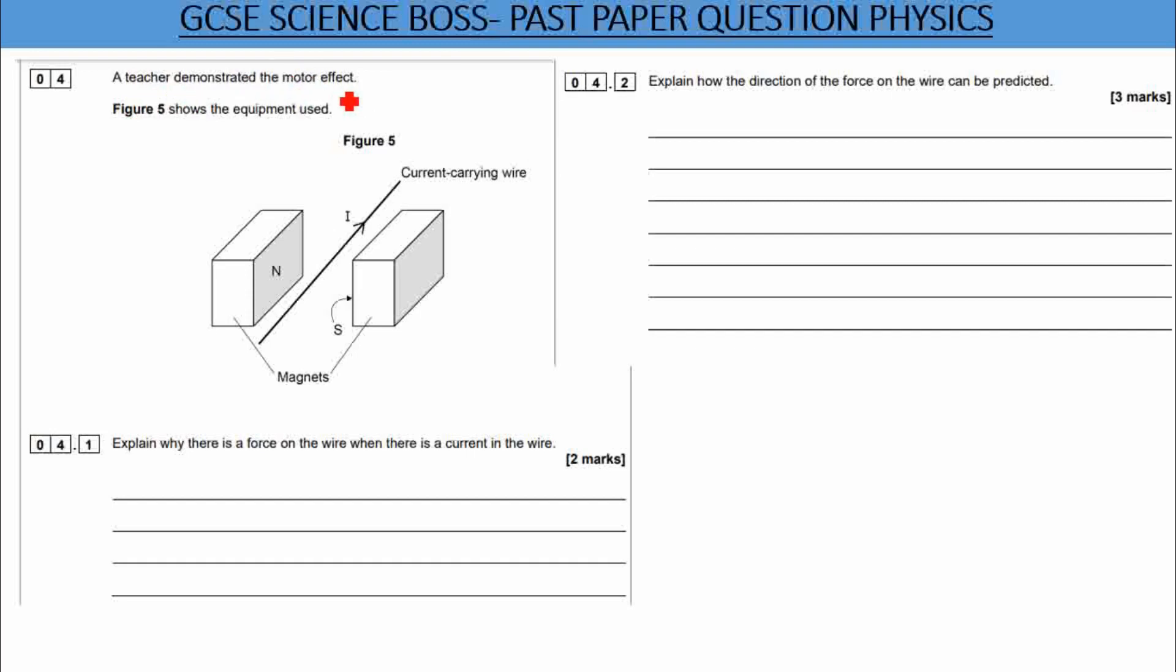So a teacher demonstrated the motor effect. Figure 5 showed the equipment used. So you have two magnets here and you have a wire which is carrying a current.